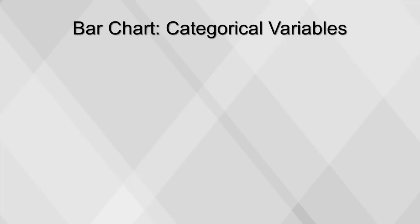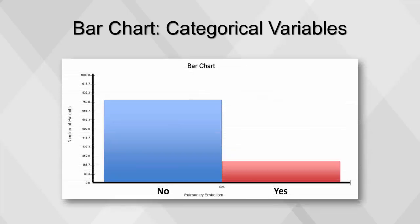A bar chart translates the data from frequency tables into a pictorial representation. It depicts categorical variables and shows frequency or proportion in each category.